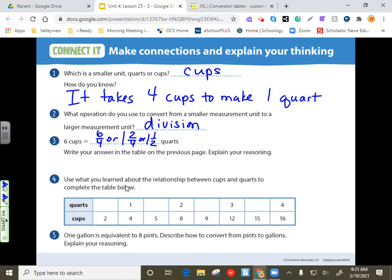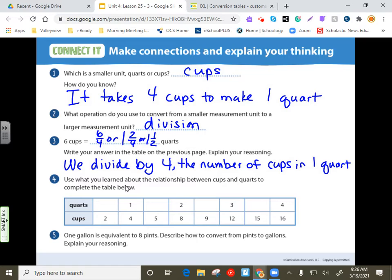Write your answer in the table on the previous page. Checked off. We did that. Explain your reasoning. We divide by four. And that is the number of cups in one quart. Become cups and quart experts by the end of this. All right. Down below, use what you learned about the relationship between cups and quarts to complete the table. So we have this. We basically have everything we already know is listed in with these blanks. So, again, it's very similar to what you'll see today on that. So let's start down here on the left.